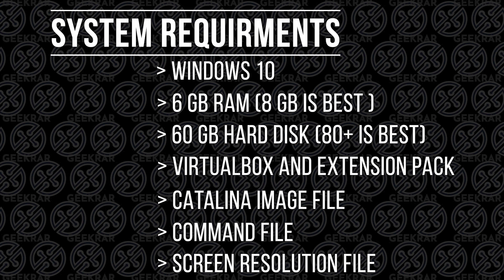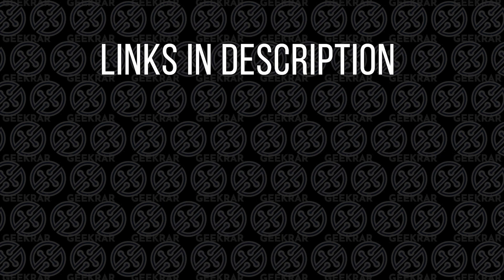The command file is there to adjust settings to make sure that we can install macOS Catalina, because by default you won't be able to install it. The resolution file is there so we can have full screen capabilities. Getting the ISO files may not be the easiest thing, so we're not going to leave you high and dry — in the description below we're going to have links to all the files we've mentioned.